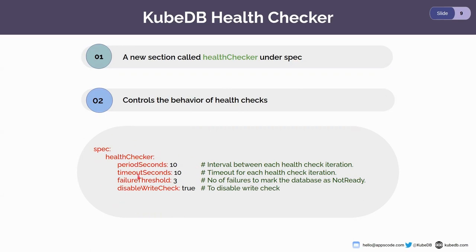There are four fields: period seconds, timeout seconds, failure threshold, and disable write checks. Period seconds is for the interval between each health check iteration — if you provide 10 seconds, each health check will be performed every 10 seconds. If you provide timeout seconds as 10 seconds, that means there will be a 10-second timeout for each health check. If a health check cannot complete within 10 seconds, it will be considered as failed.